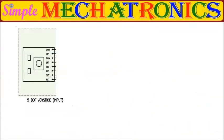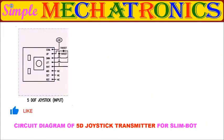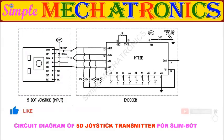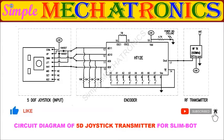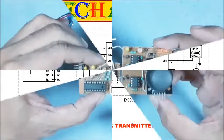This is the transmitter circuit diagram. The pinouts of 5DOF rocker joystick are connected to the input pins of HD12E encoder. Then, the encoded signal is transmitted wirelessly using RF transmitter module.